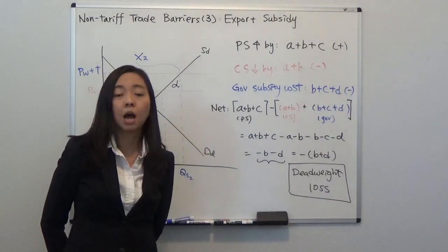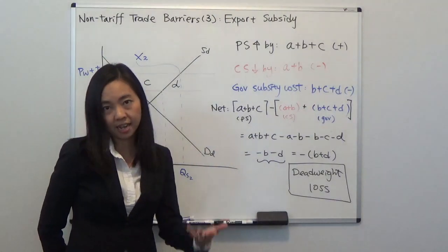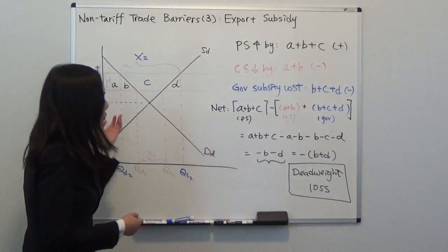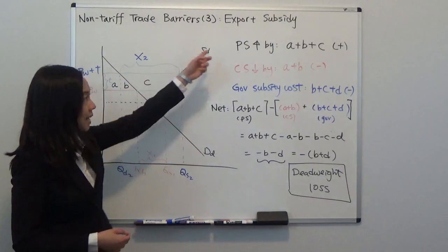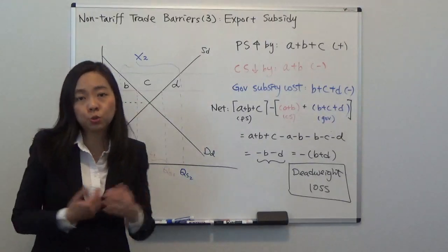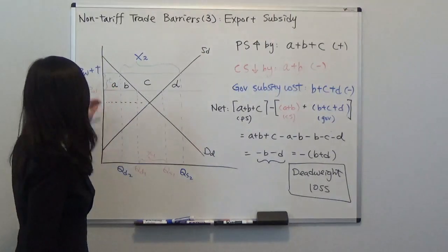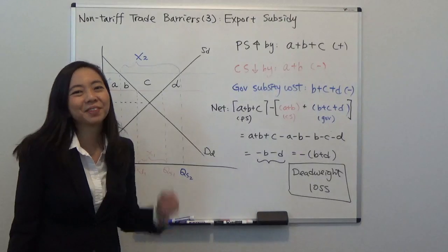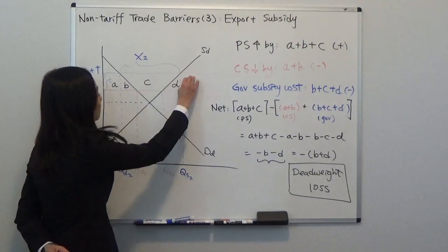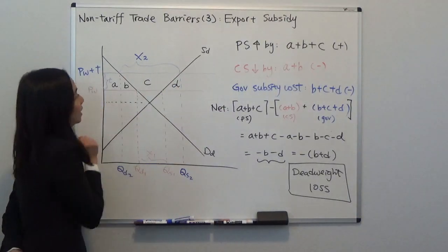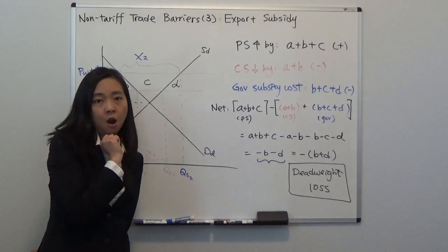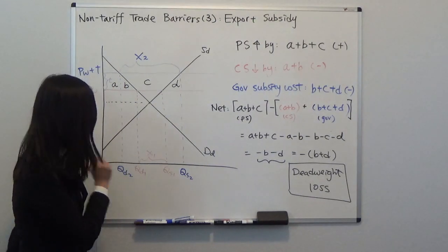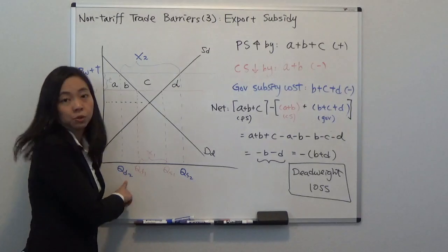Domestic producers will say: for each unit I sell to you domestic consumers, you will have to pay me PW plus T, otherwise I would rather export instead of selling locally. Therefore, with the export subsidy, that's going to increase our local price from PW to PW plus T, which lowers our local quantity demanded from QD1 to QD2.